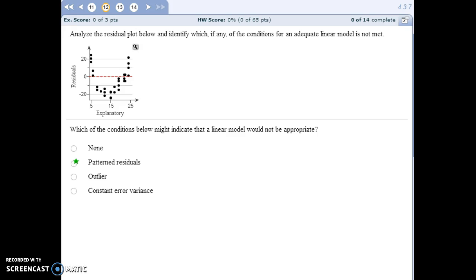A third thing to check for would be an outlier in your residual plot. For this example on number 12, what we're seeing is a patterned residual, a U-shaped pattern. So a linear model would not be appropriate.